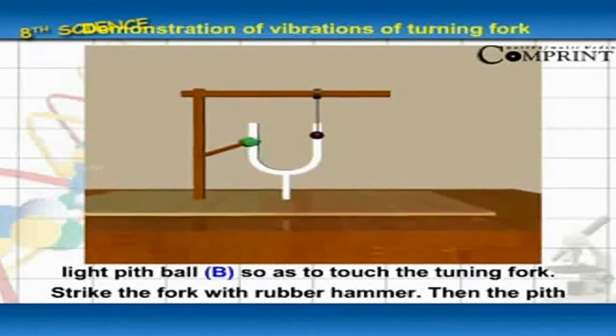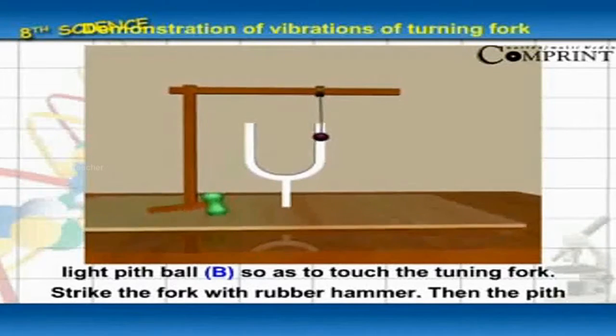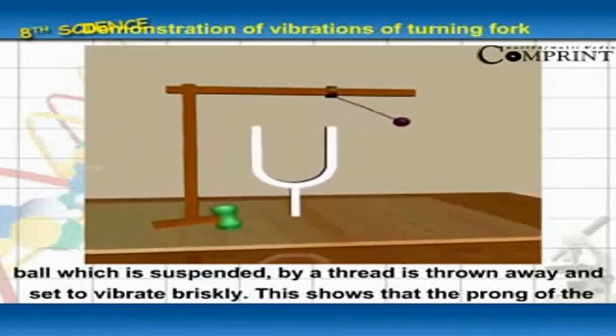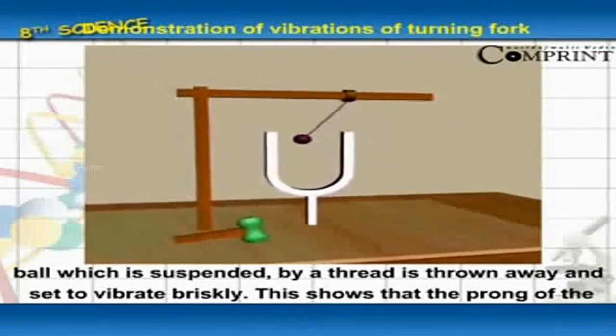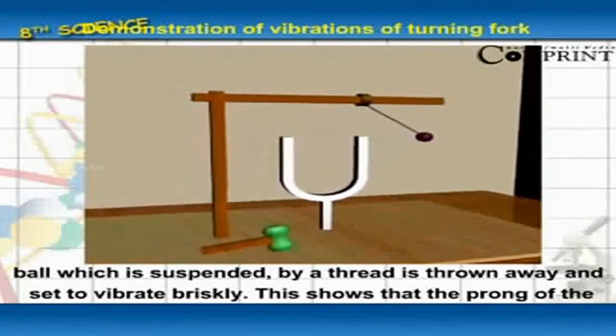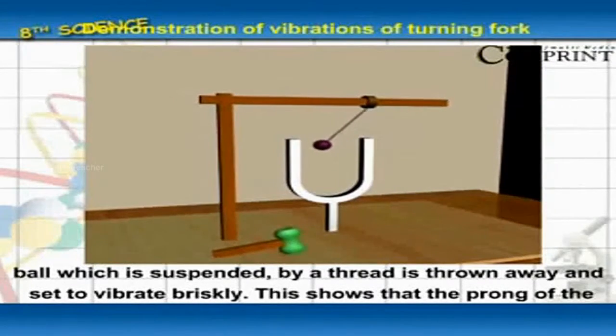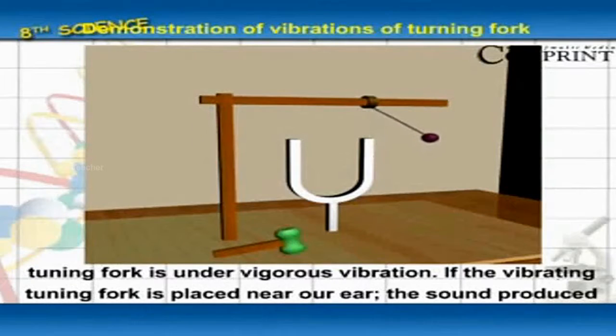Strike the fork with a rubber hammer. Then, the pit ball which is suspended by a thread is thrown away and set to vibrate briskly. This shows that the prong of the tuning fork is under vigorous vibration.